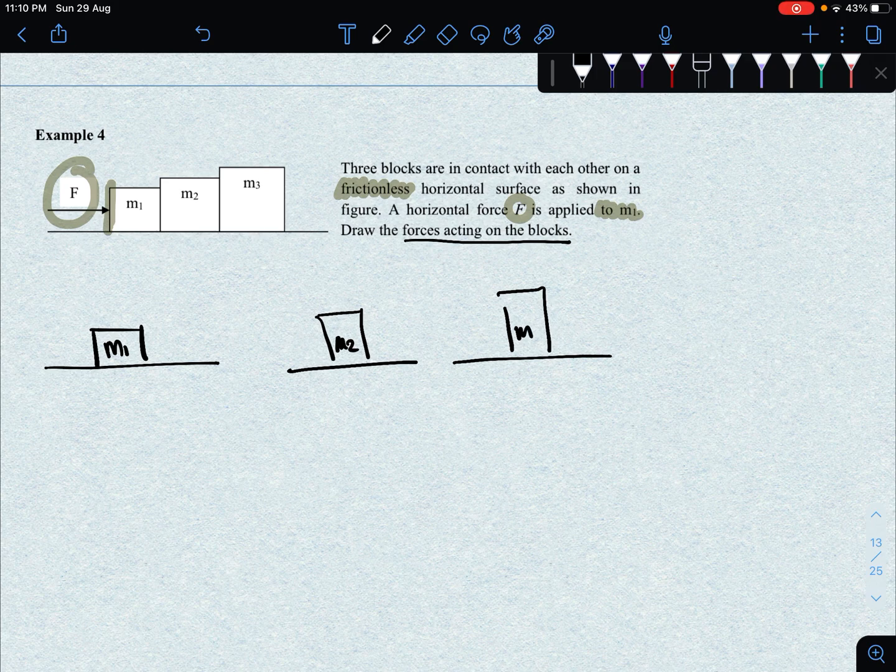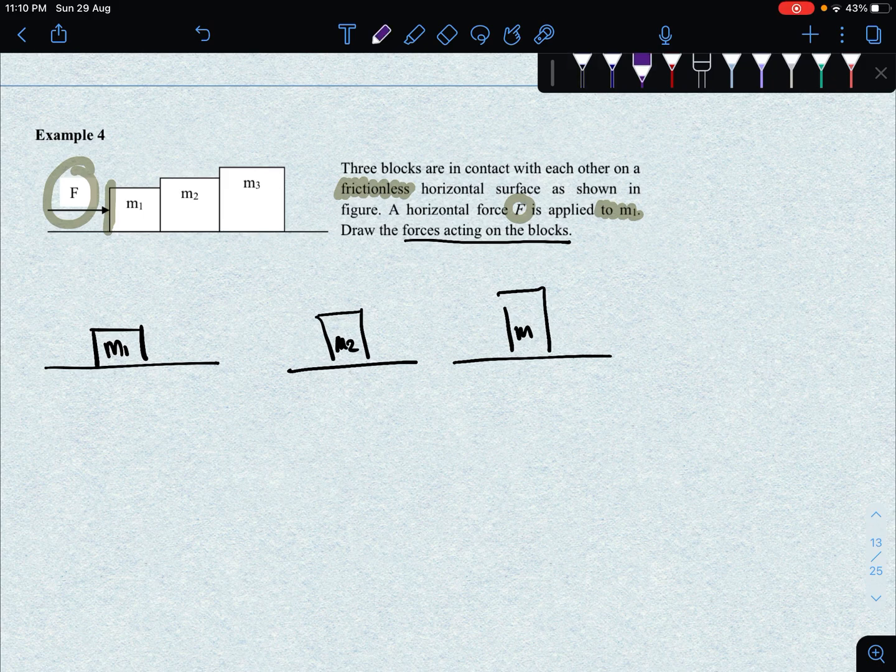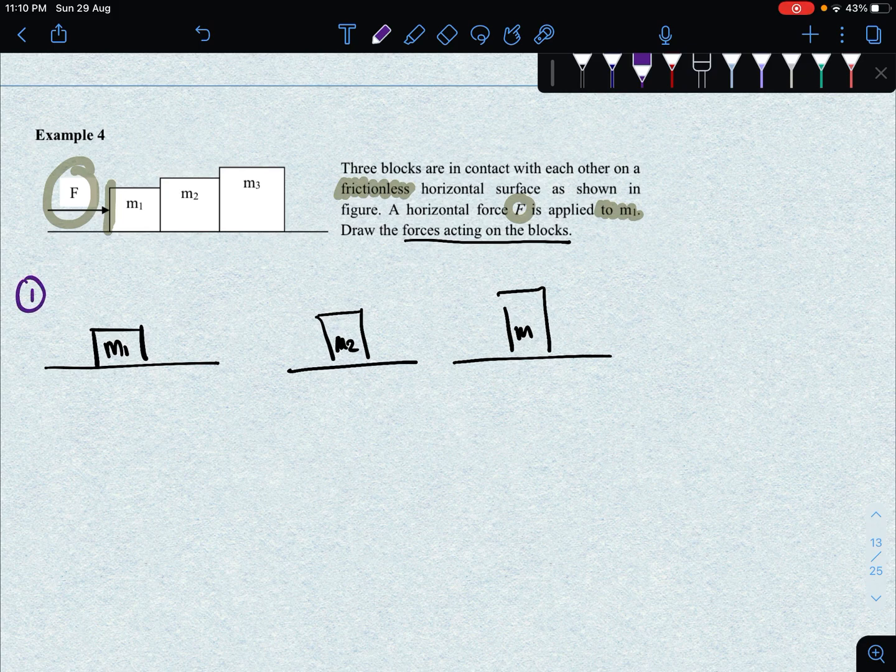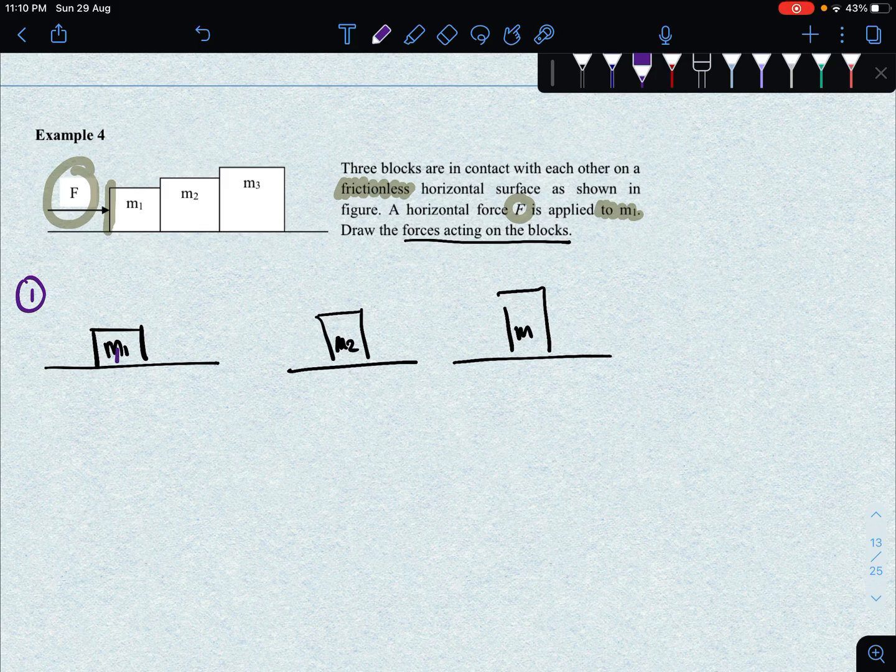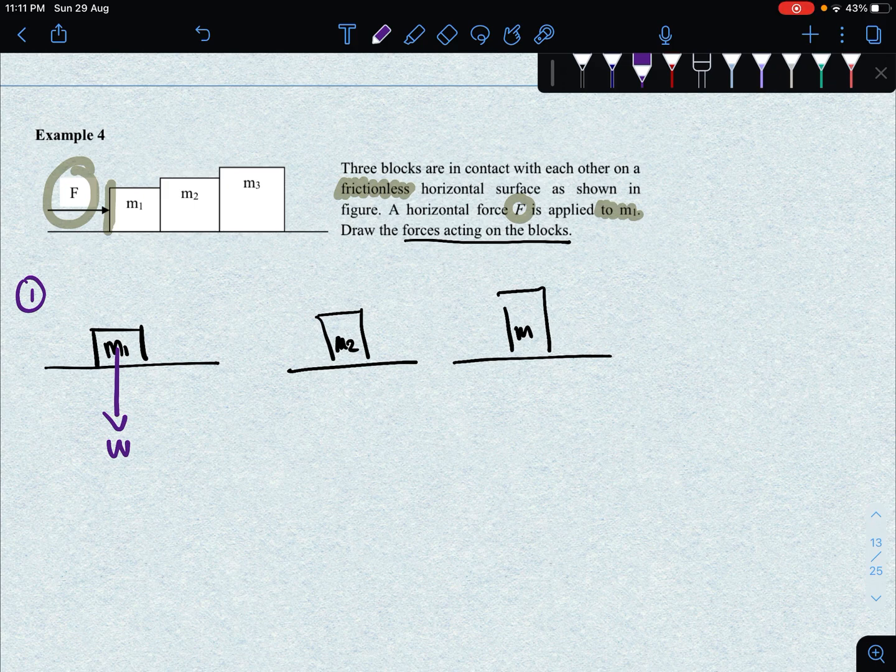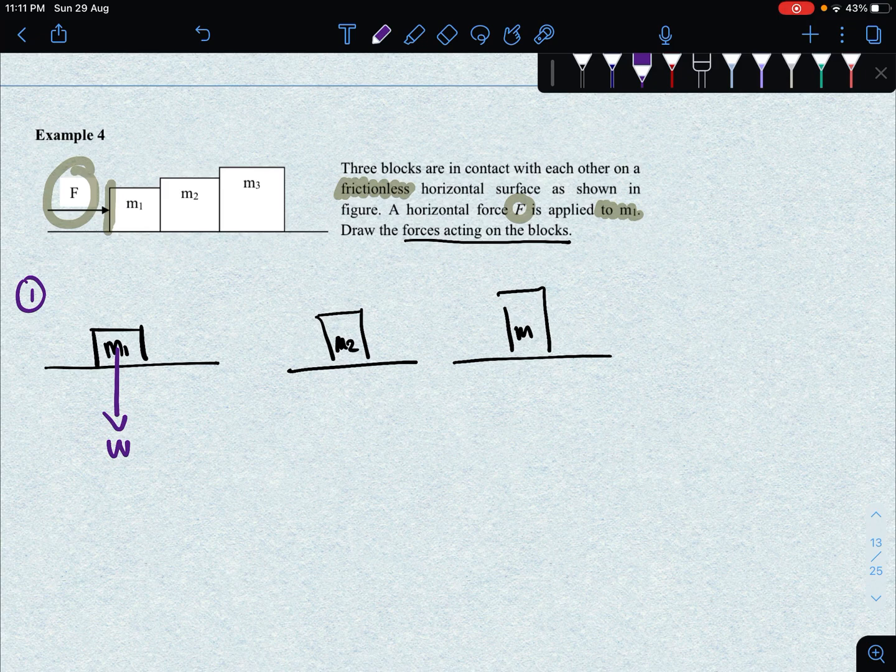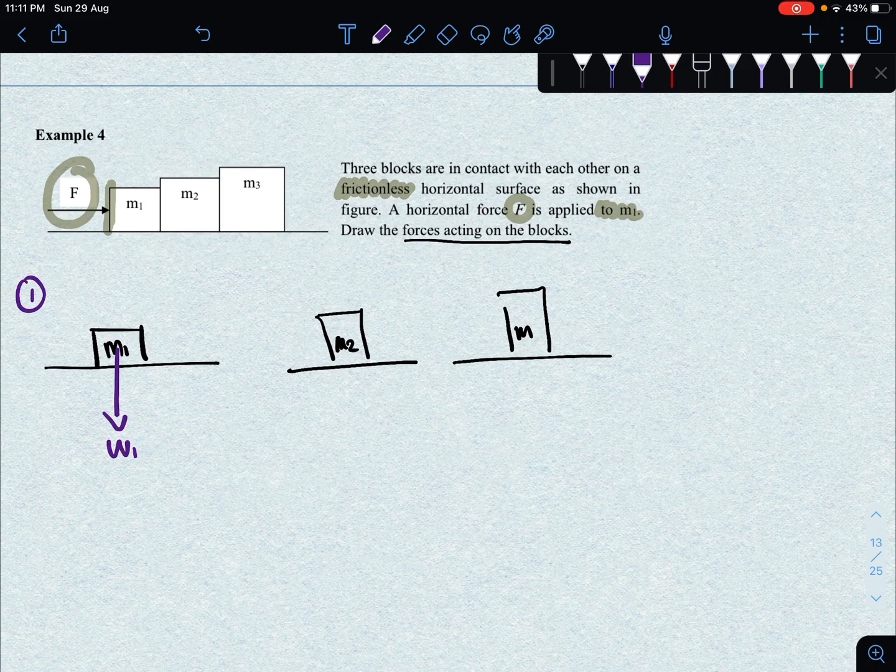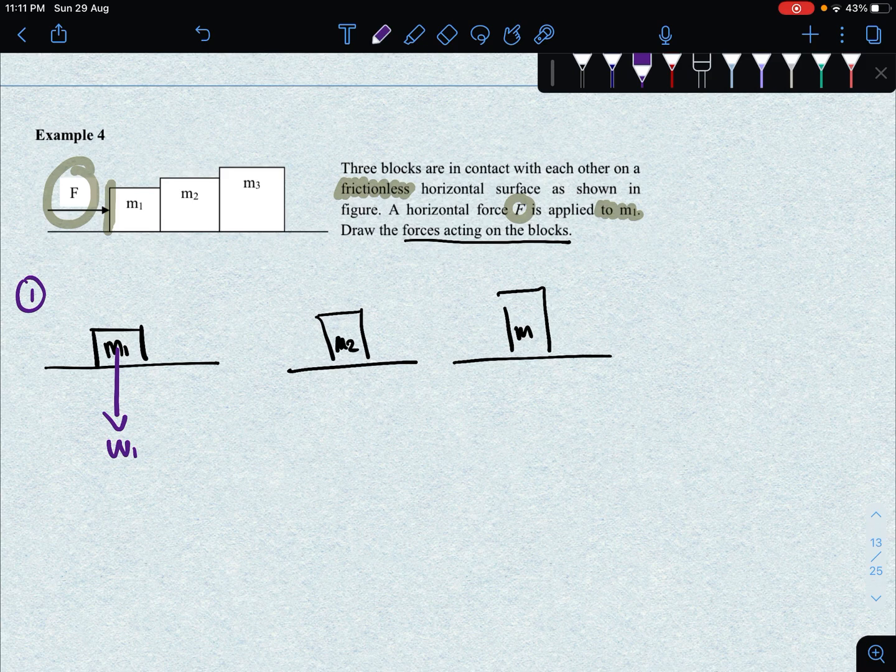We are going to look at them separately and then draw the free body diagram on them. First we identify the forces acting on M1. M1 obviously is a block, it's going to have mass, therefore it will have weight force. Since we have three objects here, you must use subscript 1 to distinguish between the objects. So the W1 here refers to the weight force of object 1.